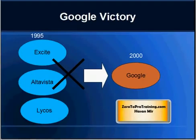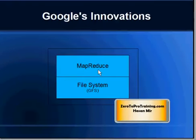But why did that happen? How did Google achieve that kind of victory? Behind Google's victory were two technology pieces: MapReduce and the Google File System.